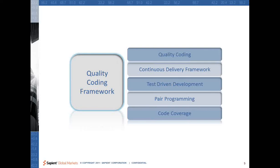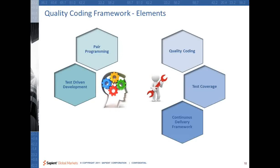Let's see that these five elements can actually be divided into either a mindset thing, which is in terms of understanding or living code quality, and a few other things like quality coding, test coverage, and continuous delivery framework. These are the tool set part of it.